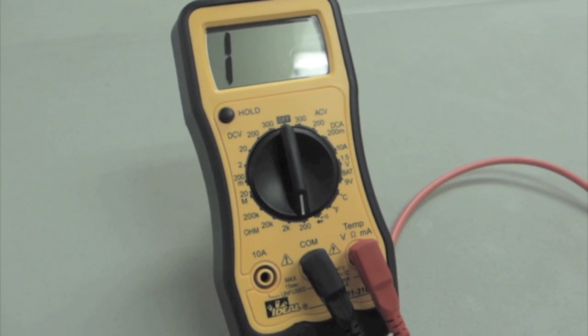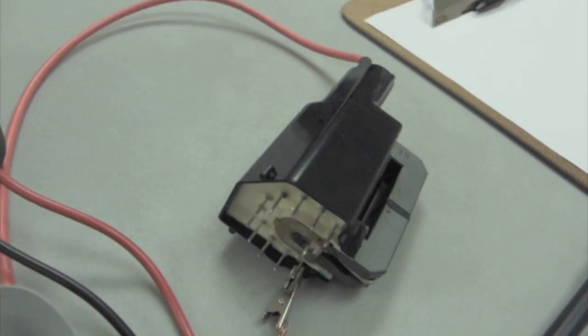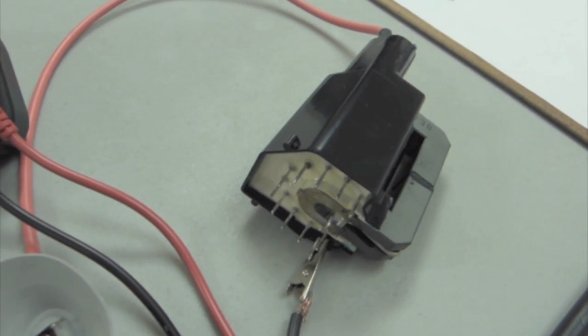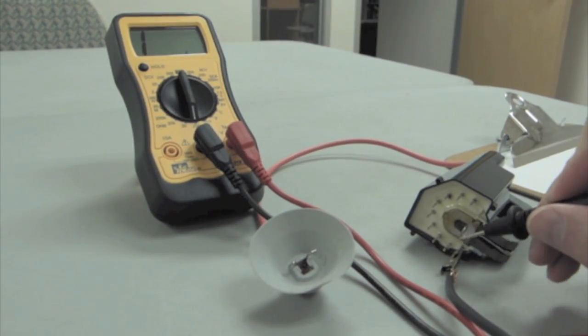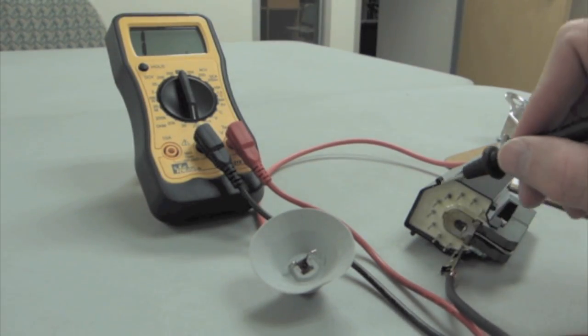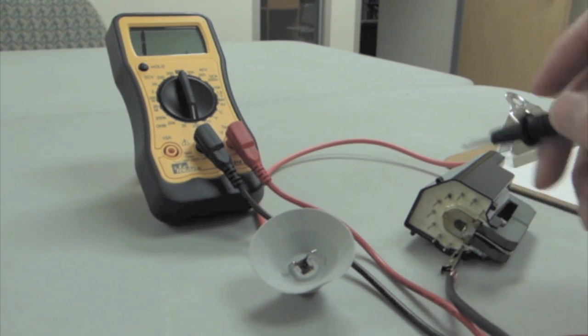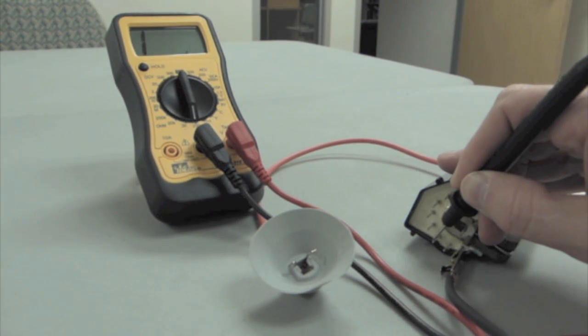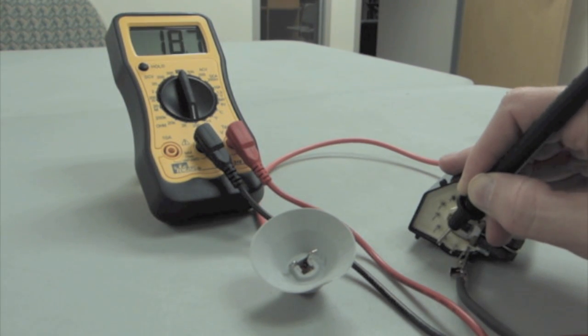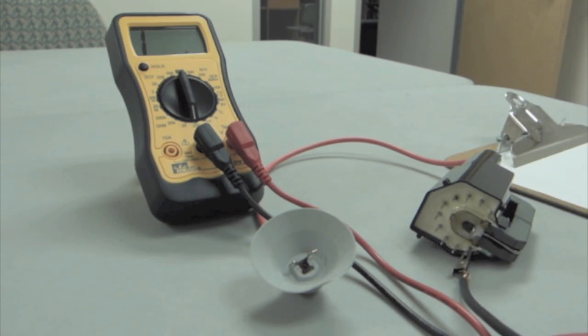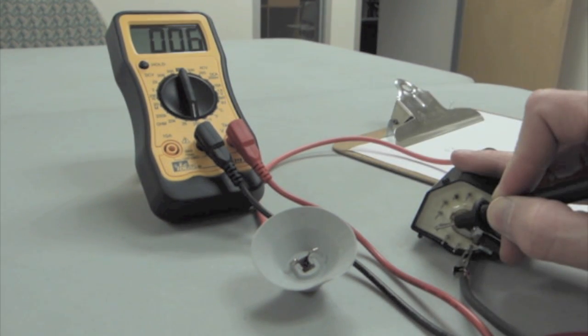Now the multimeter is measuring ohms and we're going to go around and check the resistance of each of the circuits inside the flyback. I started by connecting to pin 1 and we'll go around and see which other pins are connected to pin 1. There's a resistance of 0.2 between pin 1 and pin 3. There's a resistance of 0.4 between pin 1 and pin 4.